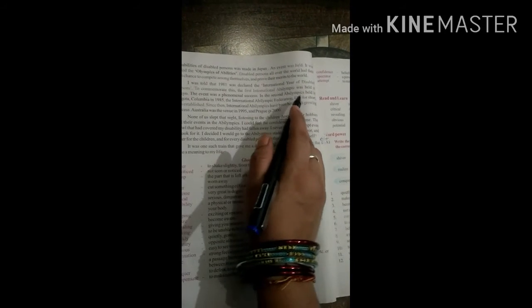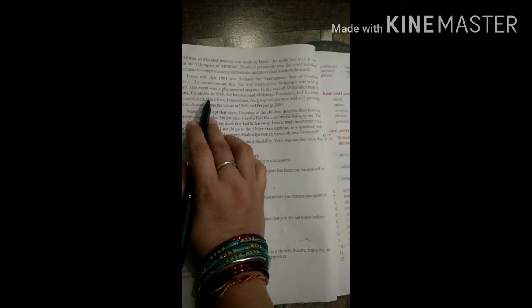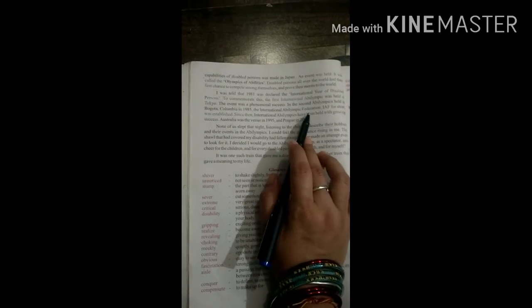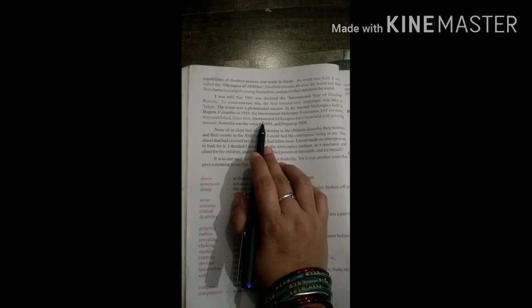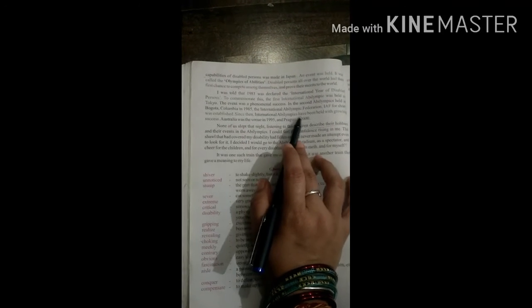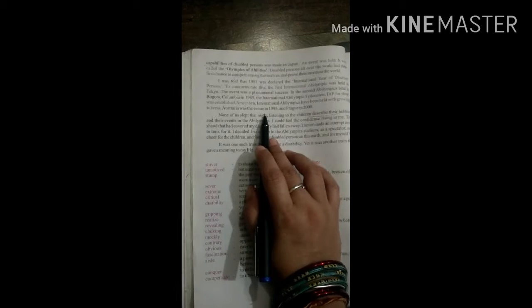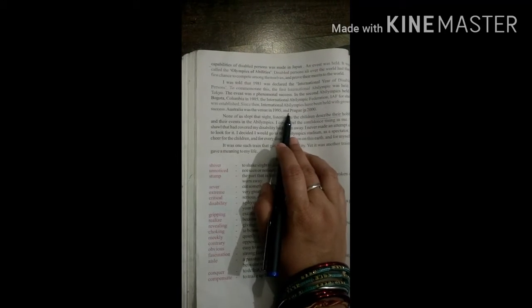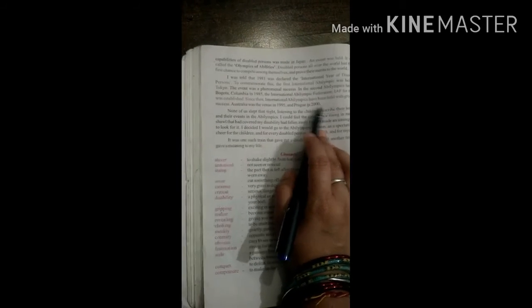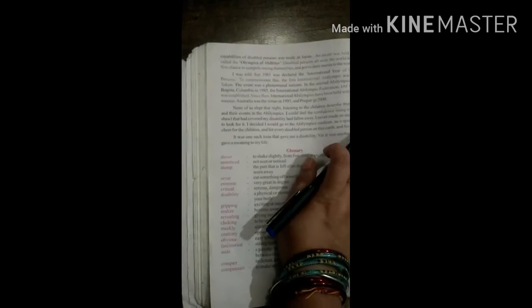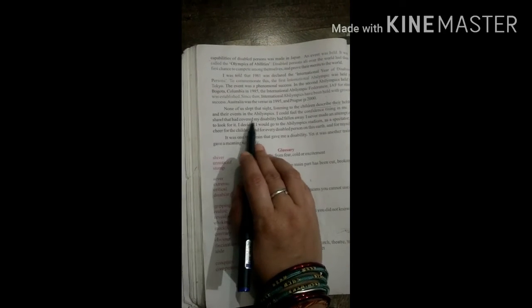The second Abilimpics was held in Colombia, where the International Abilimpics Federation was established. Since then, the International Abilimpics had been held with growing success. Australia was the venue in 1995 and Prague in 2000. None of us slept that night, listening to the children describe their hobbies and their events in the Abilimpics.